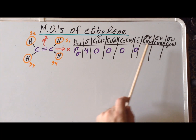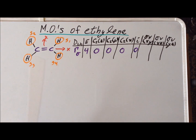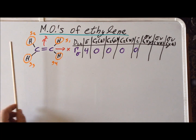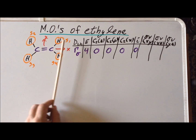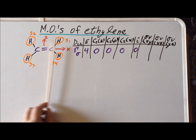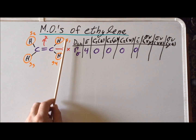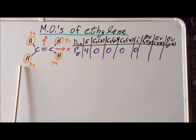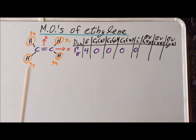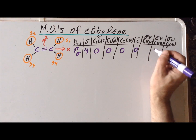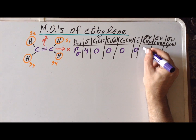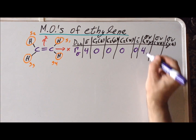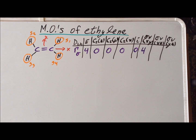Then we have our three sigma v's, our vertical mirrors. The first one is the xy plane, and that reflects S1 into S1, S2 into S2, S3 into S3, and S4 into S4. Since all four orbitals stay in place, our character here is four.